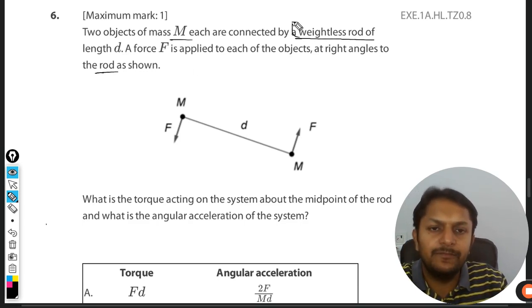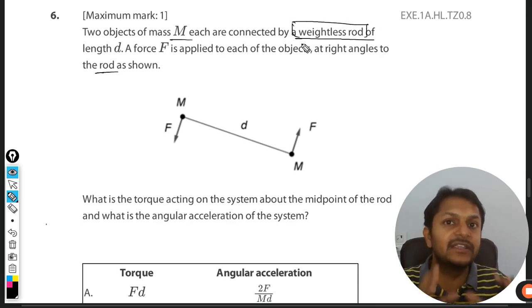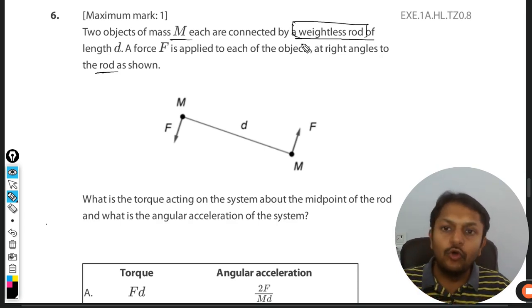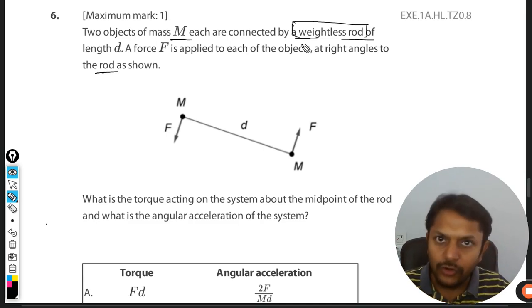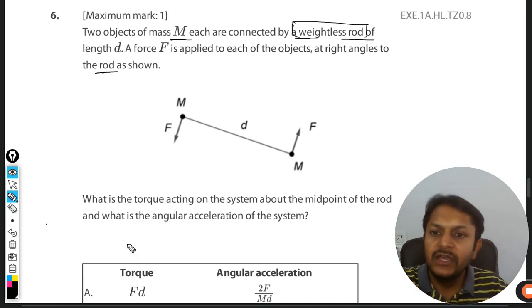But weightless rod, okay, this is a very important concept. This is a rod but the rod is not having any mass, so there will be no moment of inertia because of the rod. So only two masses will be considered, not the rod. Be very careful, otherwise the moment of inertia should be given to you.